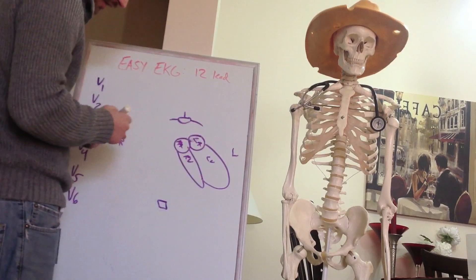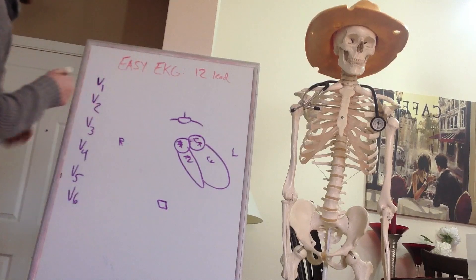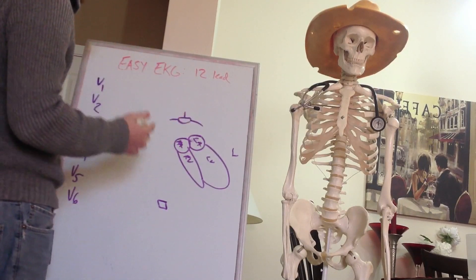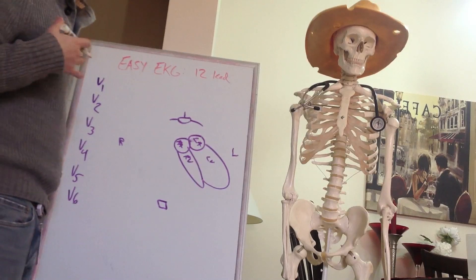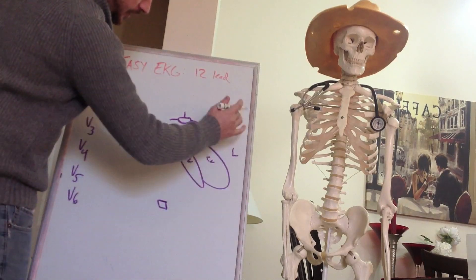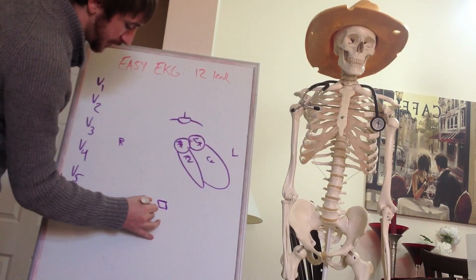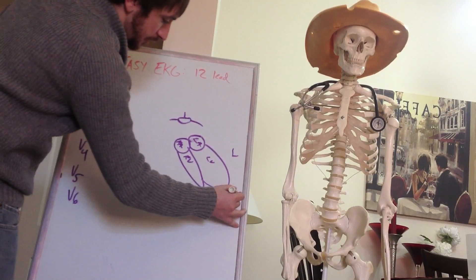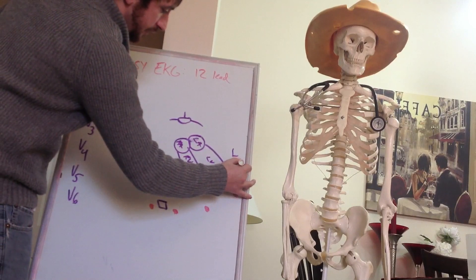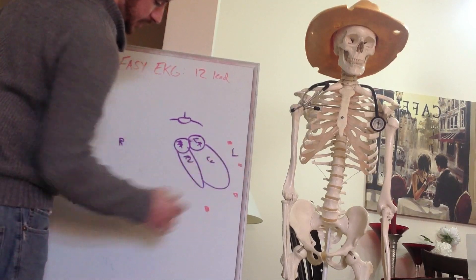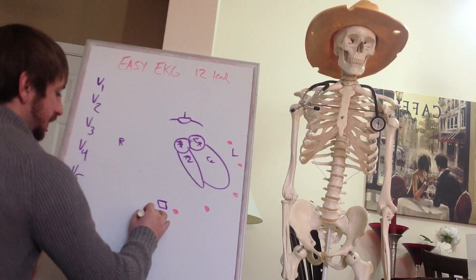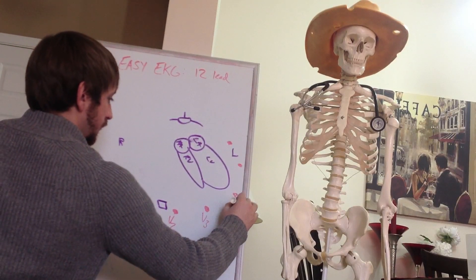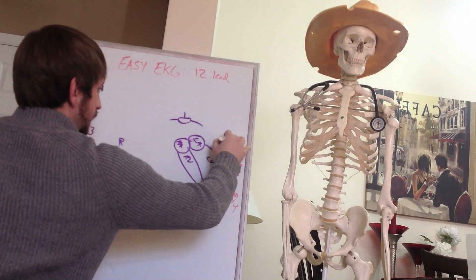So when we take the precordial leads, they go around the body from the anterior side to the posterior — they kind of wrap around. We would have V1 on one side of the sternum, V2 on the other side, then V3, V4, V5, and V6 continuing around. The right ventricle is on the anterior side of the chest and the left ventricle is on the posterior side.